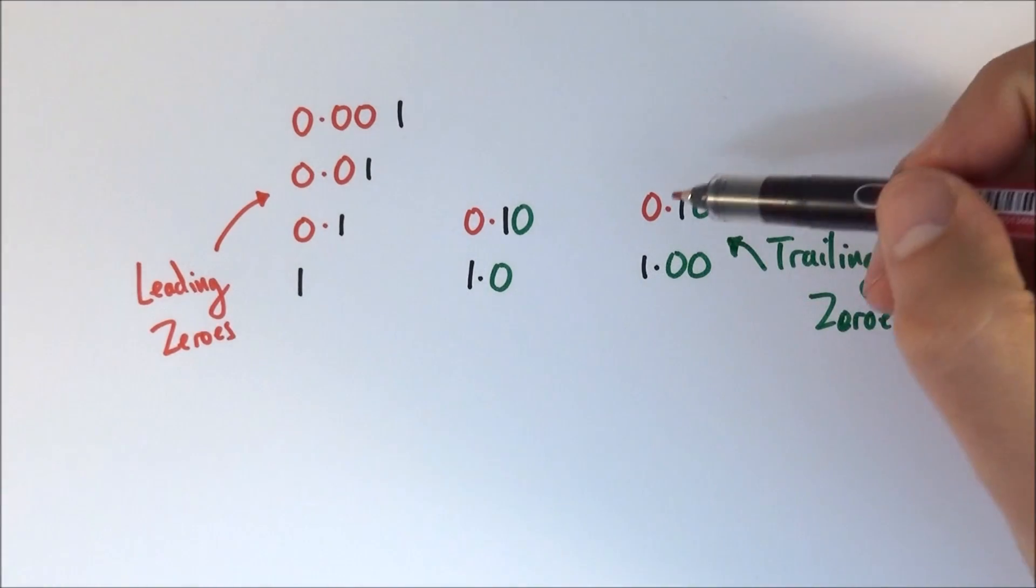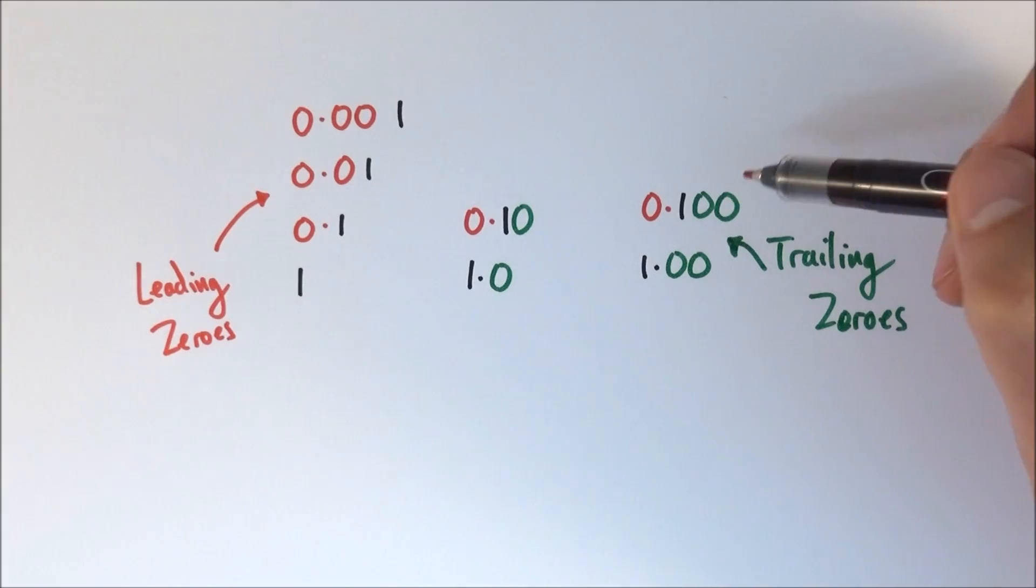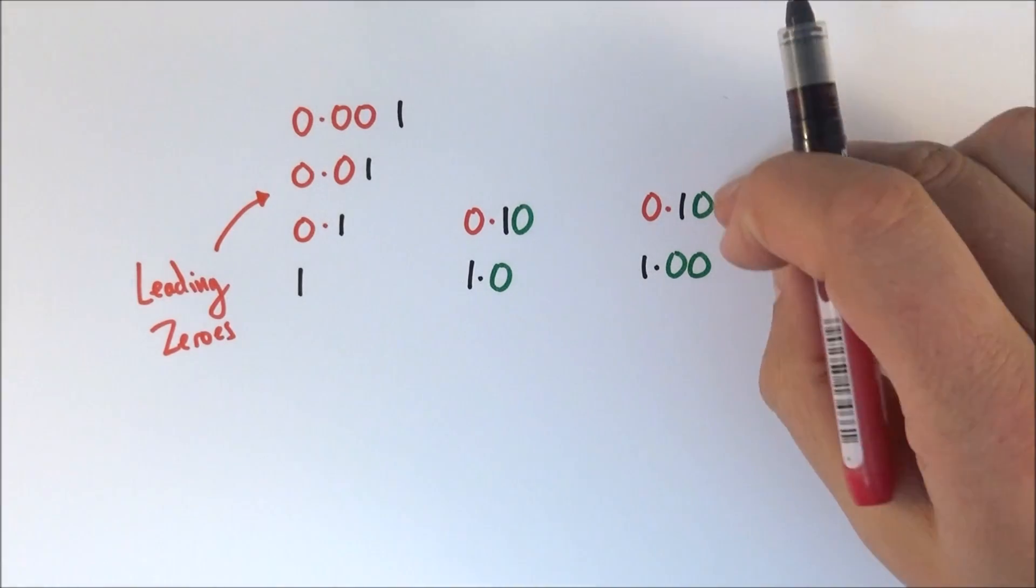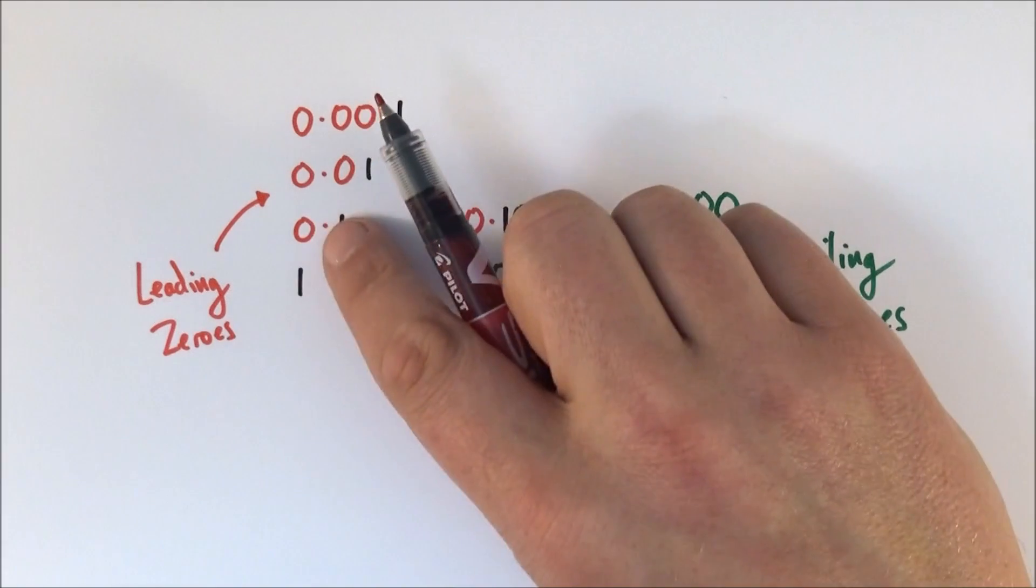So this hopefully makes sense and you can see that 0.100 means that we can know this number to a greater deal of precision or accuracy than this one.